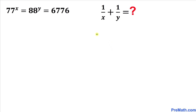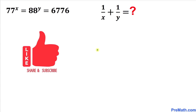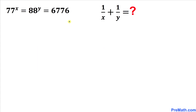Welcome to pre-math. In this video we have got this exponential equation: 77^x = 88^y = 6776, and now we are going to find the value of 1/x + 1/y. Please don't forget to give a thumbs up and subscribe. So let's go ahead and get started with the solution.